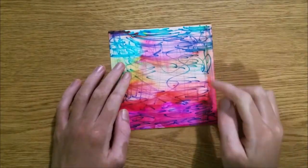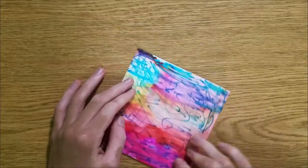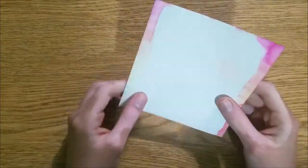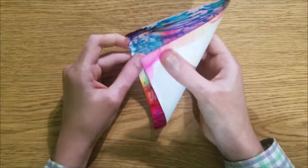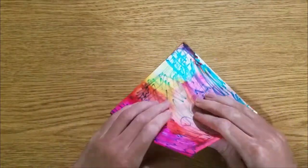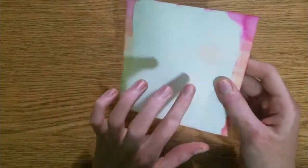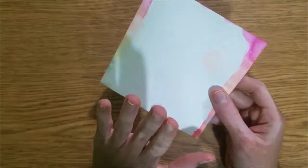Starting with the colored side up, you're going to fold the diagonals. We're going to be making a square base. So first, in half, put the colored side up, this one, not this one.